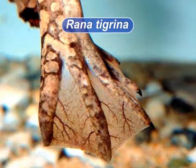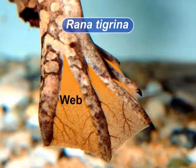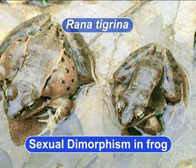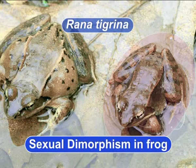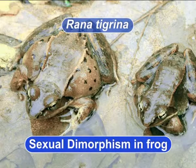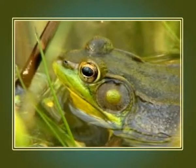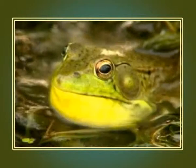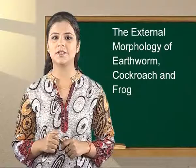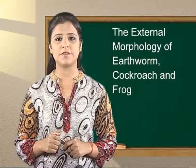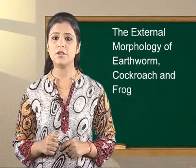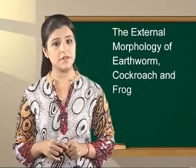Regarding sexual dimorphism in frog: the male is smaller in size. The ventral surface of the trunk is smooth in the female but rough in the male. The male has two vocal sacs located near the base of the jaws. The males have a nuptial pad on the index finger. Sexual dimorphism is a phenomenon in which the two sexes are morphologically different. This was about the specimens we observed today — the external features of cockroach, earthworm and frog.